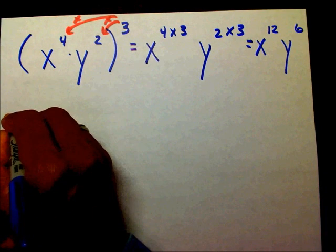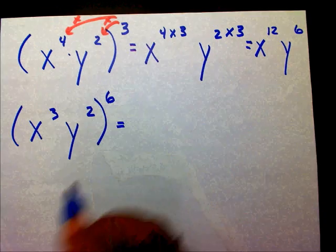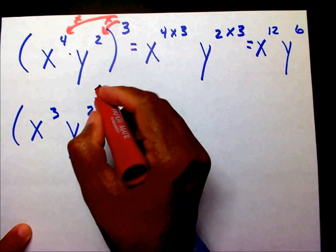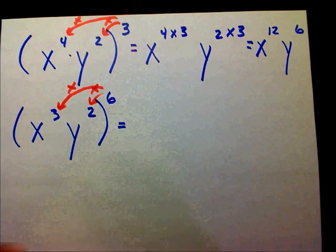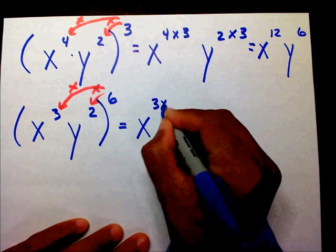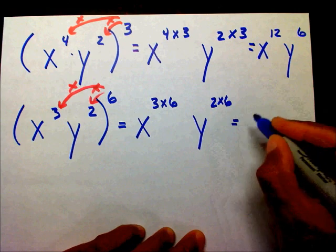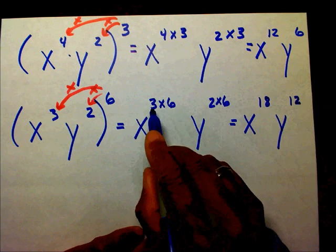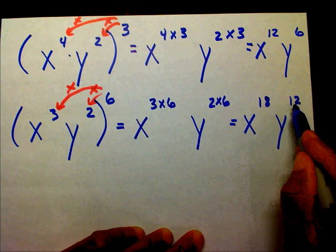Let's try another one. If I had x to the 3rd, y to the 2nd, raised to the 6th. I'm going to multiply my 2 times my 6, and my 6 times my 3. So I'm going to have x to the 3 times 6, y to the 2 times 6, which equals x to the 18th, y to the 12th. Because 3 times 6 is 18, giving x to the 18th, and 2 times 6 is 12, giving y to the 12th.